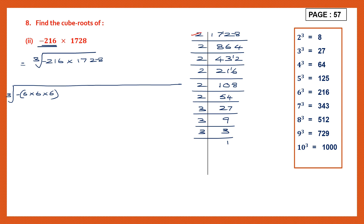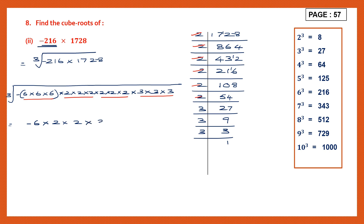Let's count the number of 2s — 1, 2, 3, 4, 5, 6. We have six 2s. So let's write that: 1, 2, 3, 4, 5 and 6 twos, and then we have three 3s — 1, 2, and 3. Now we put them in triplets. Here we have 6, here we have one set of 2, another set of 2, and then we have 3. So this is minus 6 into 2 into 2 into 3. Now let's multiply — 6 twos are 12, 12 twos are 24, 24 into 3 is 72. So we have minus 72 and this is our answer.